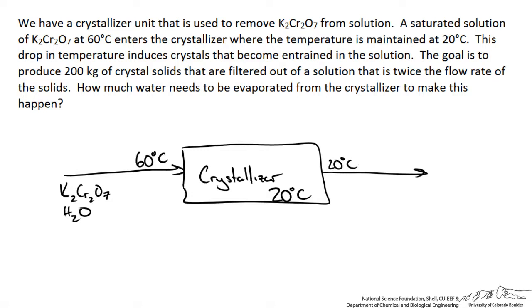Now this drop in temperature induces crystals that become entrained in the solution. So we are going to have a saturated solution of our potassium dichromate with some water making up that solution, and then we will also have a solid stream that is entrained in that solution, some amount of crystals. Now the goal is to produce 200 kilograms of crystal solids that are filtered out of a solution that is twice the flow rate of the solids. So that means we have 400 kilograms of our saturated solution.